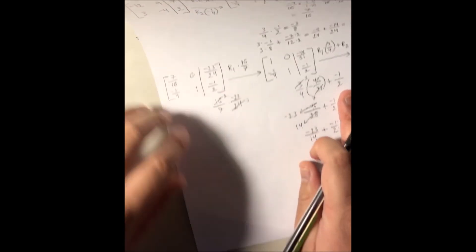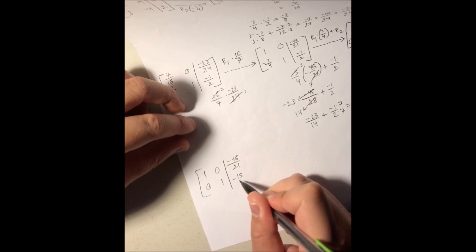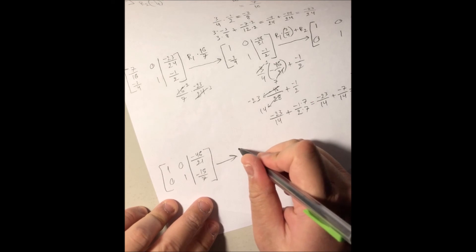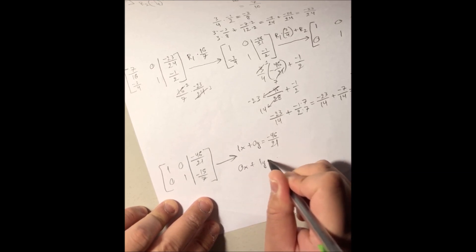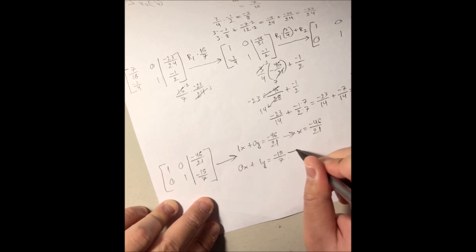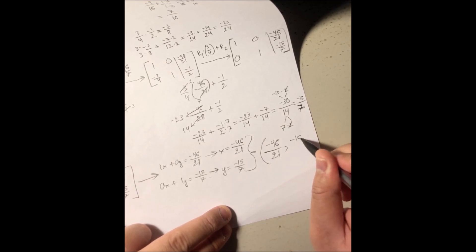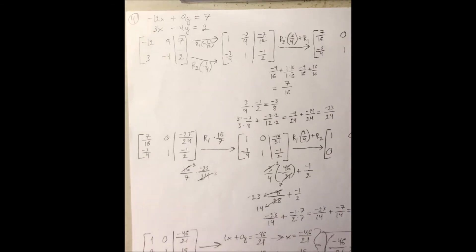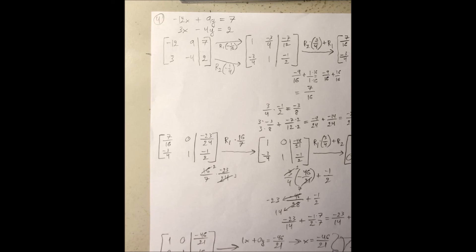So the final matrix is 1, 0, negative 46 over 21 in row 1, and 0, 1, negative 15 over 7 in row 2. That means x equals negative 46 over 21 and y equals negative 15 over 7. The solution to this system is (negative 46 over 21, negative 15 over 7). Don't get freaked out by fractions — just show all of your work carefully to avoid tiny mistakes.